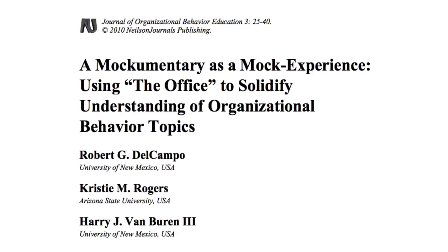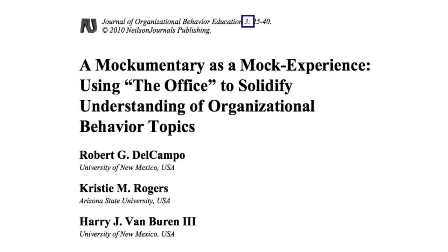Let's take a look at an example of an article found using one of the library databases. We can see the journal title at the very top of this page, the Journal of Organizational Behavior Education. Right next to that we have the volume number, volume 3, and then the page range of the article, pages 25 through 40.